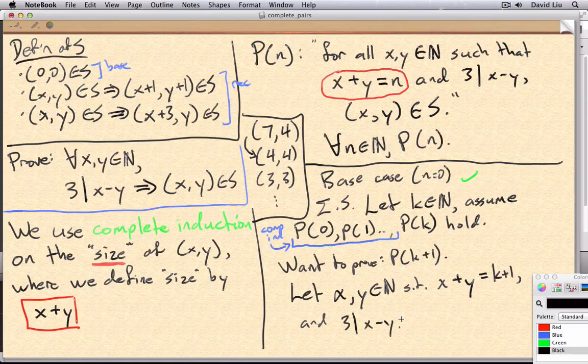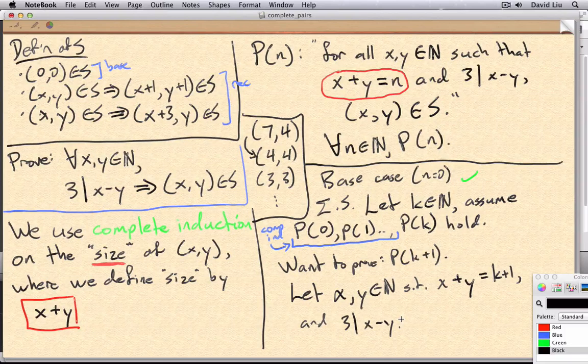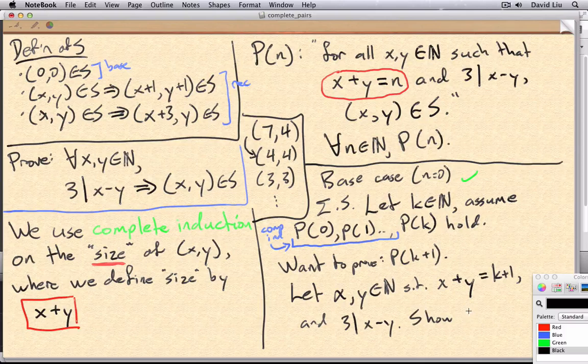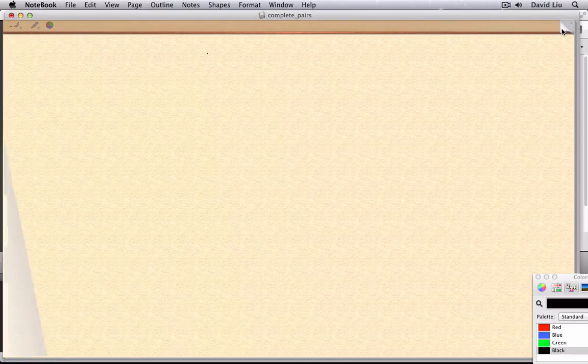So at this point, we have two natural numbers x and y, whose sum is k plus 1, and whose difference is divisible by 3. And we'll show that x,y is indeed in s. All right, how do we do this? Well, let's go back to our example 7,4.